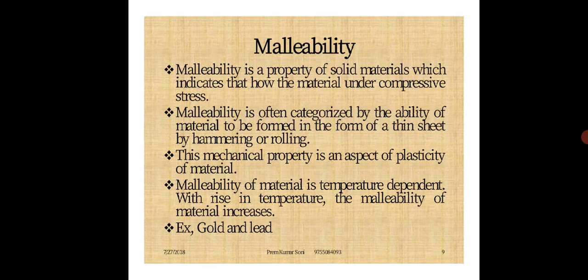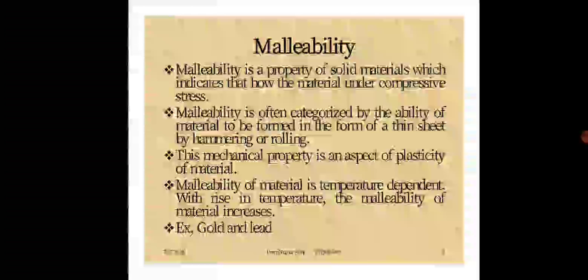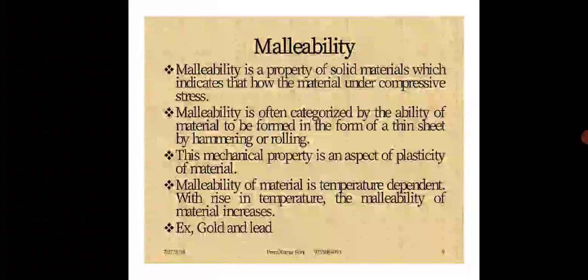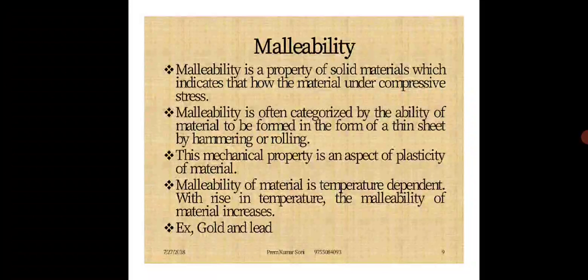Next is Malleability. Malleability is the property of a solid material which indicates how the material behaves under compressive stress. When you apply compressive stress on the material, we can convert it into thin shapes and use it for different product operations. Malleability is based on the plasticity of a material and is temperature dependent — by increasing the temperature, the malleability of the material increases. Examples of malleable materials are gold and lead. The material is heated and then subjected to compressive stress to increase its malleability property.